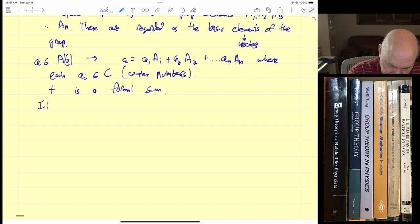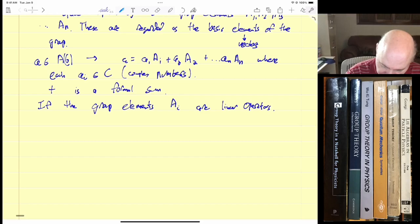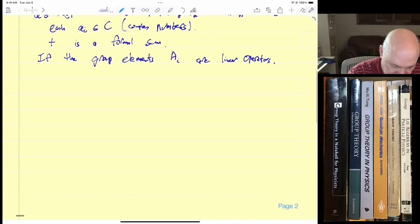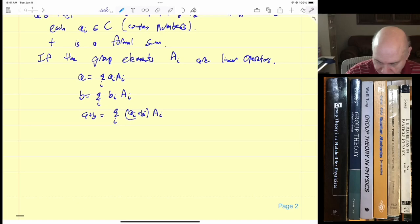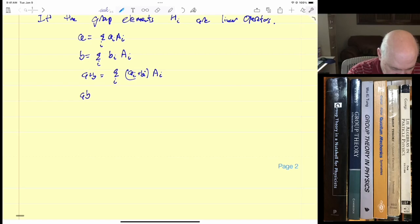Now, if the group elements Ai, let's say, are linear operators, so we have like a space of functions which they operate on, and we're dealing with linear operators that each one form a group, then we can give a definition to the sum. A is equal to the sum over I of Ai Ai, and let's say B is equal to the sum over I Bi Ai. Then A plus B is equal to the sum over I, Ai plus Bi, Ai. So it's just the way we always add operators.